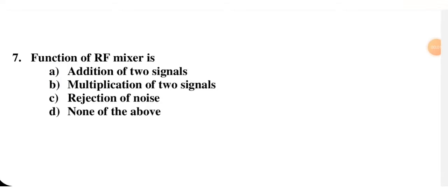Function of RF mixer — addition of two signals, multiplication of two signals, rejection of noise, or none of the above. The mixer mixes signals, but don't select addition — it is a multiplication of two signals. So B is the right option.